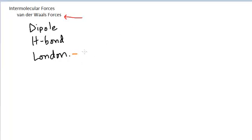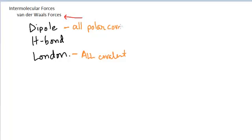London forces are present in all covalent molecules. They're actually also present in ionic compounds, though they're not that important in ionic compounds, so usually we don't worry about them there. Dipole forces are present in all polar covalent molecules, and hydrogen bonding is present in polar covalent molecules that have the special case of a hydrogen bonded to a nitrogen, oxygen, or fluorine.